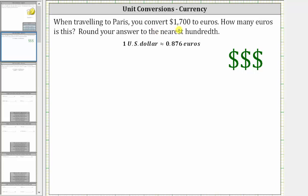When traveling to Paris, you convert $1,700 to euros. How many euros is this? Round your answer to the nearest hundredth. And we're told one US dollar is approximately 0.876 euros.